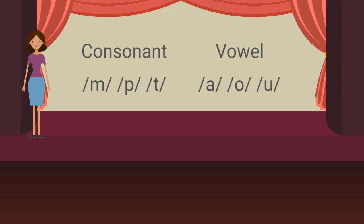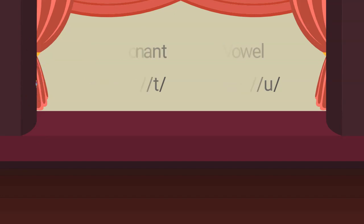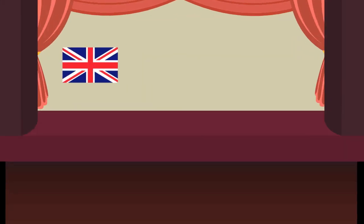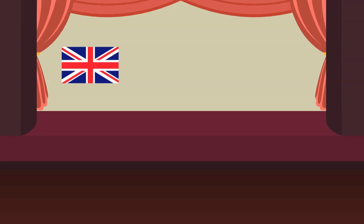And for the vowel, just like a, e, i, o, u in English. Think about the number of consonant sounds and vowel sounds in English. As you know, we have 26 English alphabets, and 5 of them are vowel sounds: a, e, i, o, u.